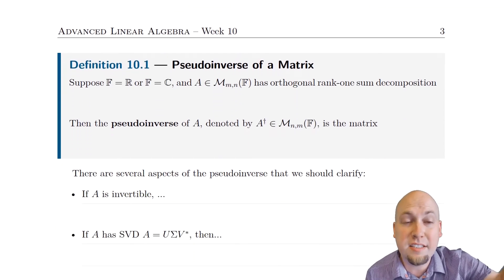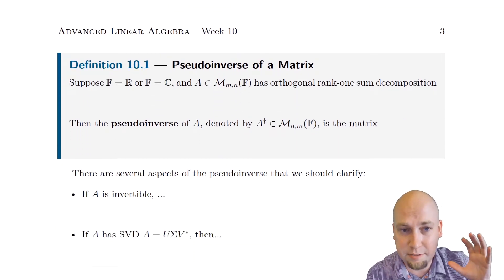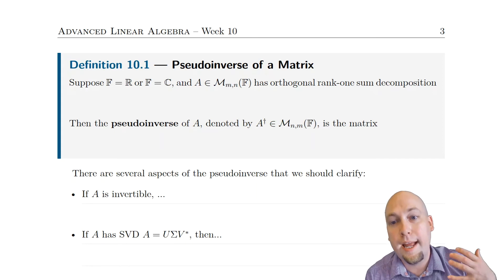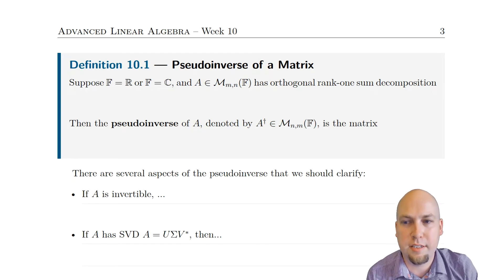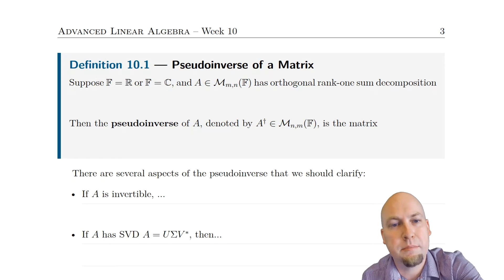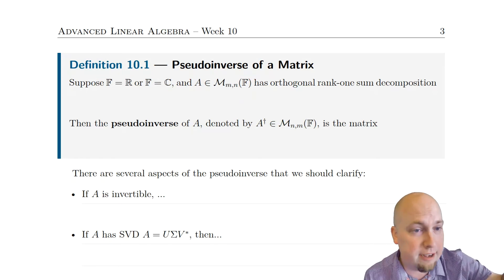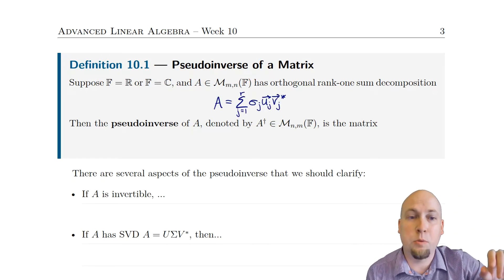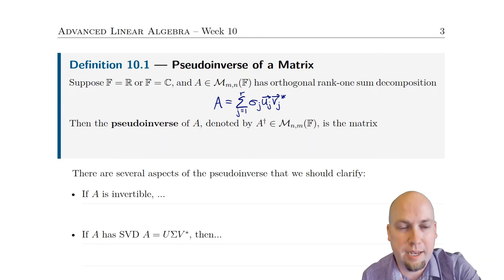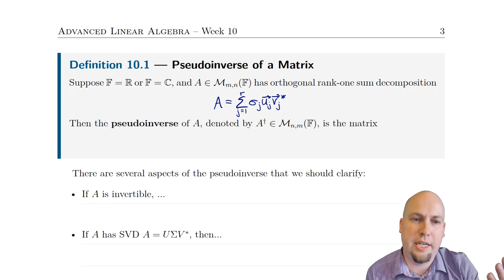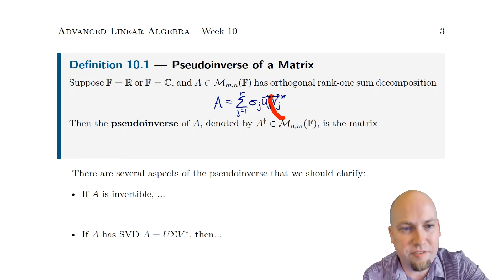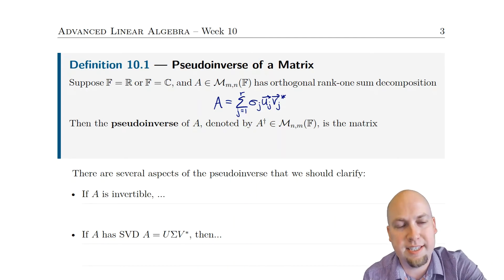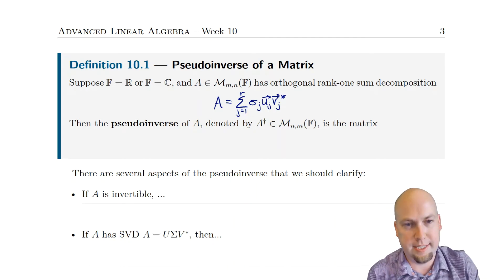Let's get to the definition of the thing that solves these problems for us — let's introduce the pseudo-inverse of a matrix. It's going to be based on the singular value decomposition of the original matrix, or equivalently the orthogonal rank-one sum decomposition of the matrix. Suppose you're working over the real or complex numbers and you have some matrix that does not even have to be square. Write down an orthogonal rank-one sum decomposition — equivalently a singular value decomposition — of that matrix. The u's are the columns of the unitary matrix U, the v's are the columns of the unitary matrix V, and the sigmas are the singular values, the diagonal entries in the big sigma matrix.